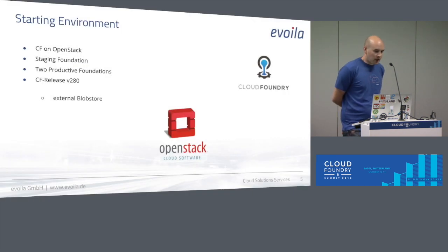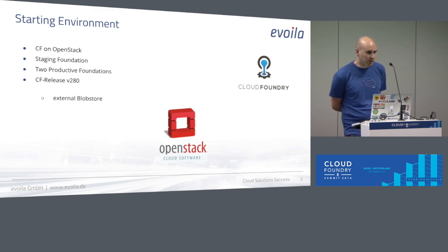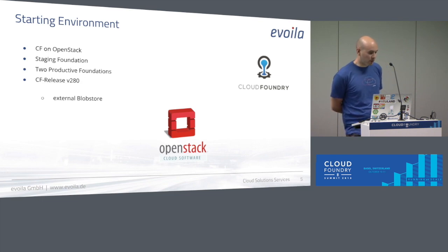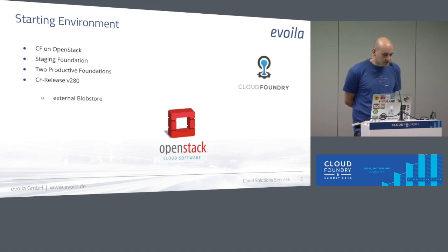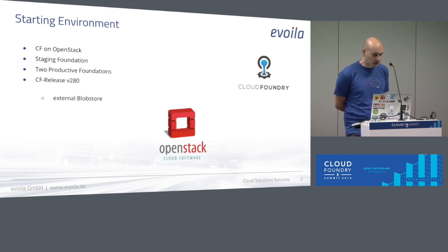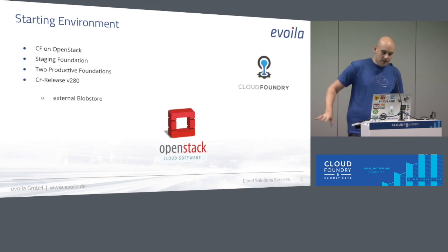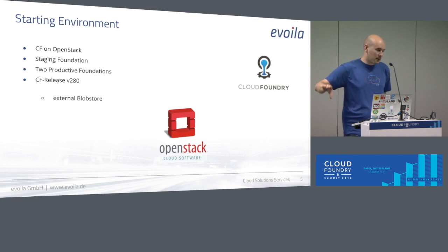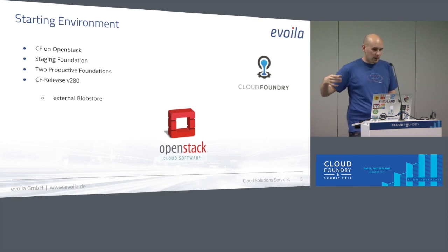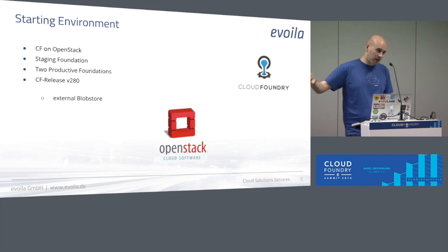Our environment at this customer was a vanilla CF on OpenStack. We had a staging foundation only for our testing purposes and two production foundations. They ran at the time CF release with the RP version 280, and they had configured an external blob store — non-internal — which is a requirement for how we did this. You may also be able to do it with an internal blob store, but in this talk I will have the requirement that you have an external blob store.